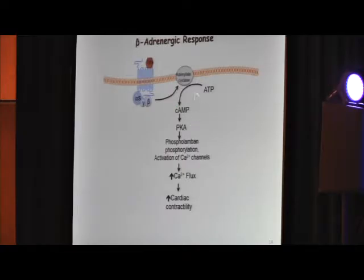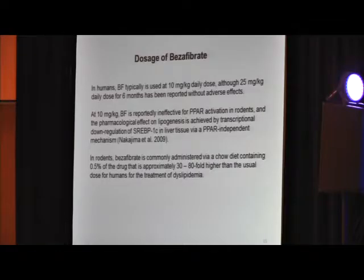This is how beta-adrenergic response works. Isoproterenol or catecholamines bind to the receptor, increase cAMP levels in the cell, which activates protein kinase A, phosphorylates calcium channel proteins, increases calcium flux, and increases cardiac contractility, increasing workload.